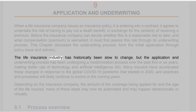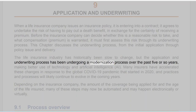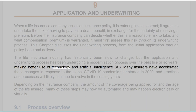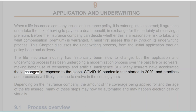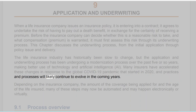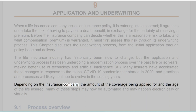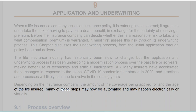The life insurance industry has historically been slow to change, but the application and underwriting process has been undergoing a modernization process over the past five or so years, making better use of technology and artificial intelligence (AI). Many insurers have accelerated these changes in response to the global COVID-19 pandemic that started in 2020, and practices and processes will likely continue to evolve. Depending on the insurance company, the amount of coverage, and the age of the life insured, many steps may now be automated and may happen electronically or virtually.